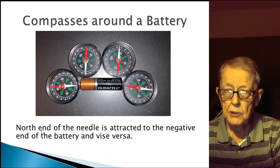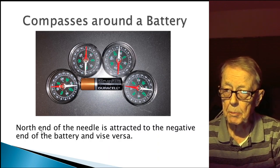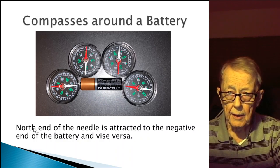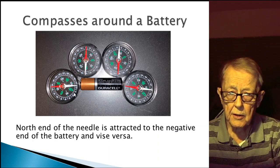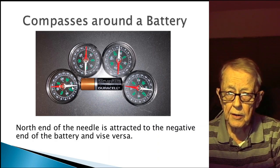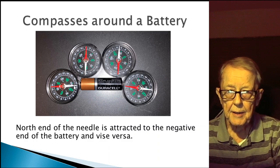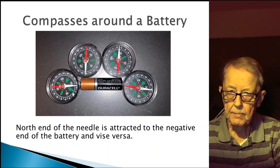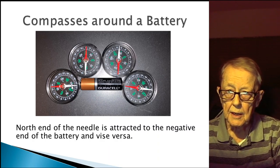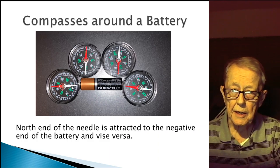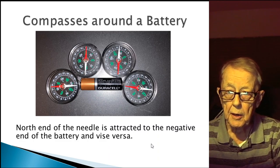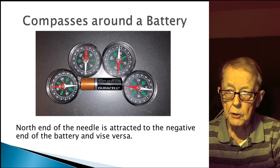The conventional explanation is that opposite charges attract and like charges repel. In this case, they assign the north end of the needle as negative, so it points to the positive terminal of the battery — meaning it's the attraction of opposite charges which they claim is causing the compass needle to move.